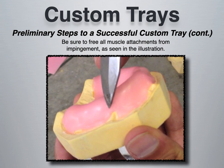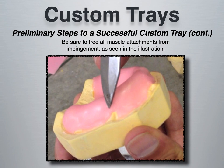Another important step is to free all muscle attachments from impingement, as seen in this illustration. If you pull your lip, you can probably locate a few muscle attachments or frena within your mouth. Moving your lip side to side, you'll notice those frena are mobile. They need the freedom to move during function — eating, making facial expressions, speaking. If you do not compensate for that space and capture these frena accurately, it could cause pain during denture insertion or cause the denture to dislodge.